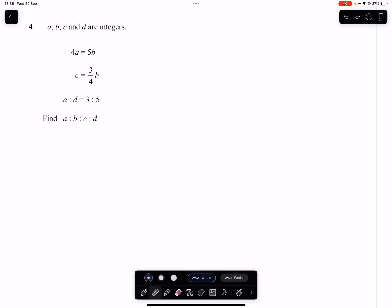Question 4. We are told that A, B, C, and D are integers, so they're all going to be whole numbers.